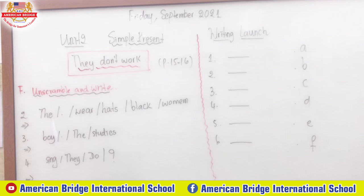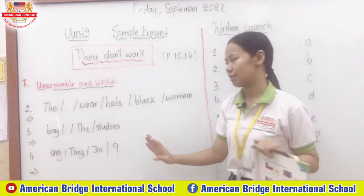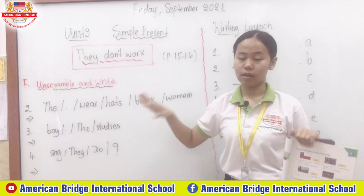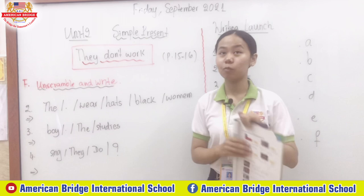You can see the other items on the whiteboard. Number two starts with 'the,' then full stop, wear, hats, black, and women — arrange this into a complete sentence. Number three has: boy, full stop, the, and studies. Number four has: sing, they, do, and a question mark. Teacher will allow you around three minutes to work on this part, then we will come back to check the answers.